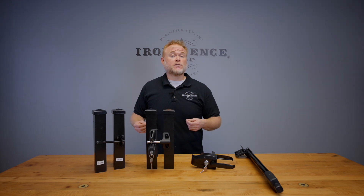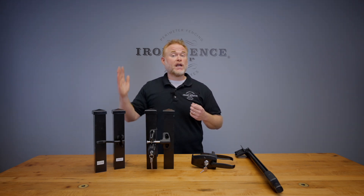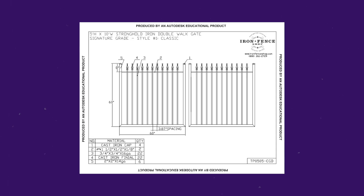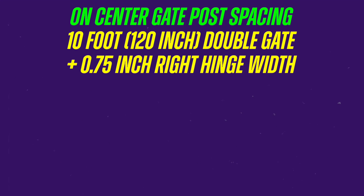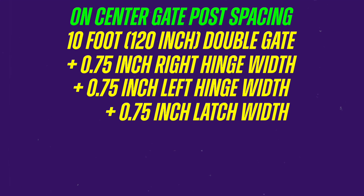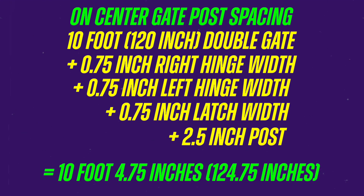For a double gate with two leafs, you need to incorporate the hinge spacing on both the right and left leaf in your calculation. For a ten-foot wide double gate with self-closing hinges and a pool code stock latch: 120 inches for the double gate, plus three-quarter inch for the right hinge, plus three-quarter inch for the left hinge, plus three-quarter inch for the pool latch, plus two and a half inches for one post, gives an on-center gate post spacing of ten foot four and three-quarter inches, or 124.75 inches.